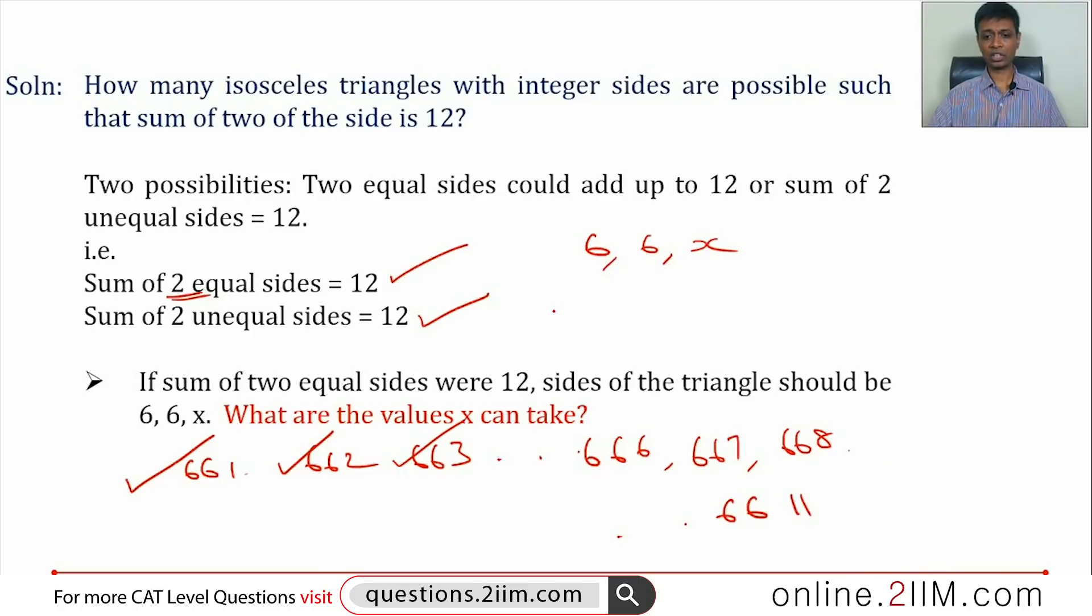So 6, 6 and x, where x can take values 1, 2, 3 all the way till 11. So when the sum of two equal sides were 12, we get 11 triangles.